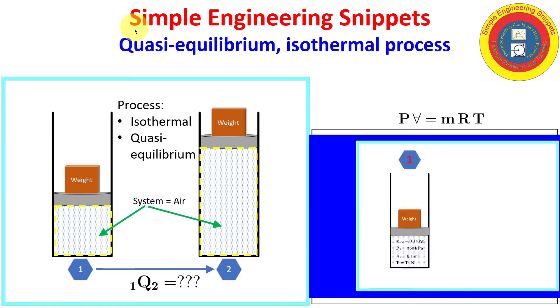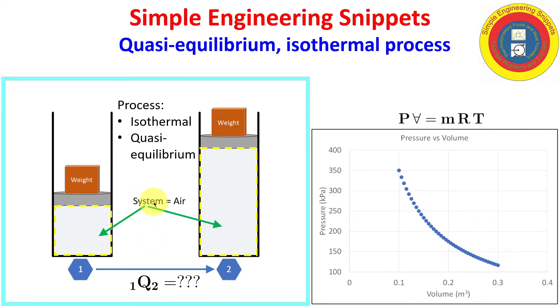All right, welcome to another simple engineering snippet. In this instructional video, we work an example to calculate the heat addition during a quasi-equilibrium isothermal work process. We will be using a piston-cylinder apparatus. The working fluid is air, which will be treated as ideal gas, and we will be using conservation of energy to determine the heat addition necessary for the change from state 1 to state 2. I hope you find it instructive.